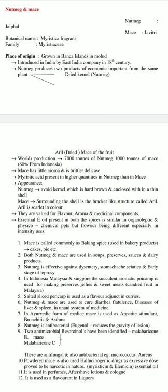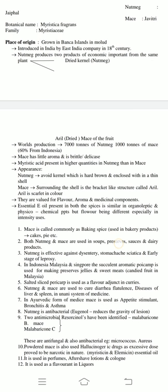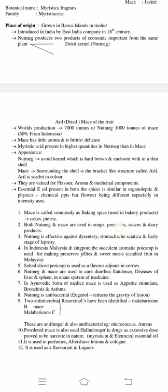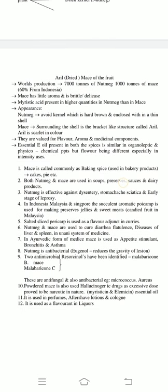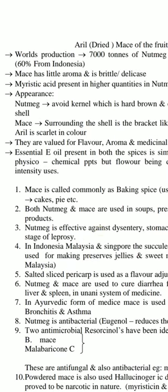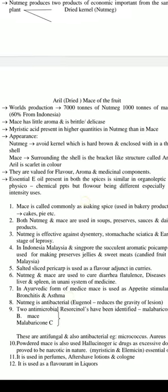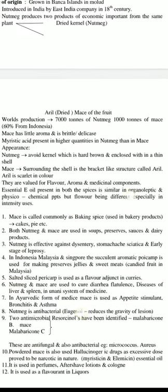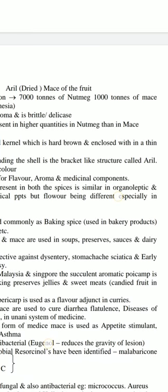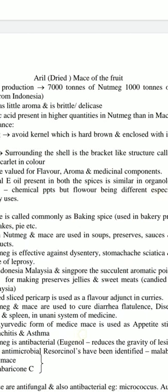Nutmeg was introduced in India by the East India Company in the 18th century. It produces two products of economic importance from the same plant — first is nutmeg and second is mace. World production of nutmeg is 7,000 tons and 1,00,000 tons of mace.